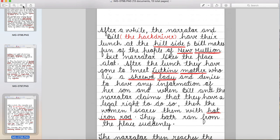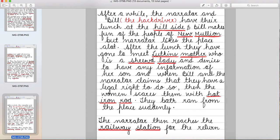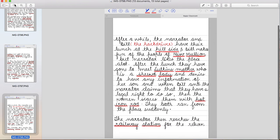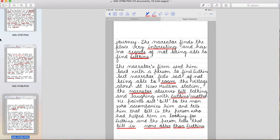And when Bill and the narrator claims that they have a legal right to do so, then the woman scares them with hot iron rod. Jaise hi narrator aur Bill claim karte hai ki legal right hai unka Lutkins ka pata jaanna, so woman unko kaise scare karte hai? She scares them with hot iron rod. They both ran from the place suddenly. The narrator then reaches the railway station for the return journey.